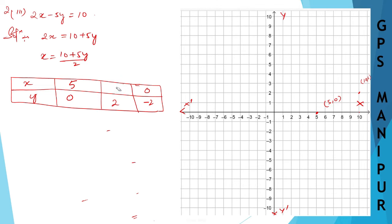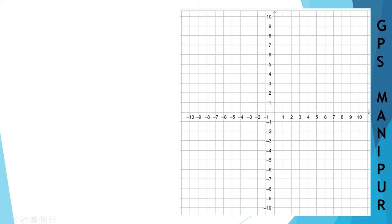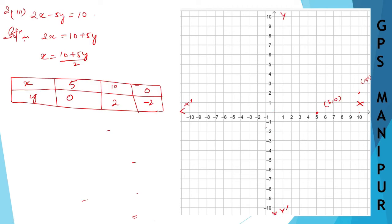Correction: 10 plus 5 into 2 is 10 plus 10, which is 20 divided by 2, so x is 10 when y equals 2. The third point is x equals 0, y equals minus 2, plotted here on the graph.